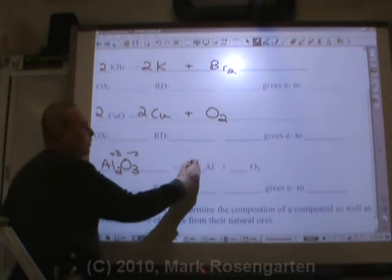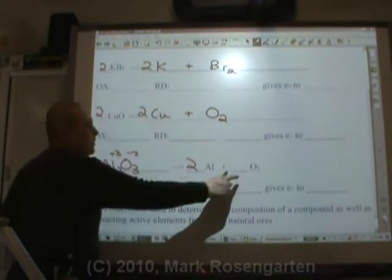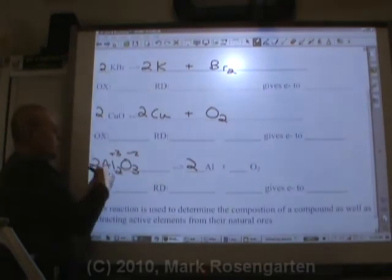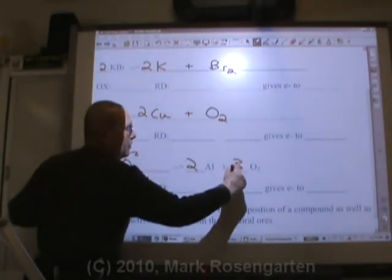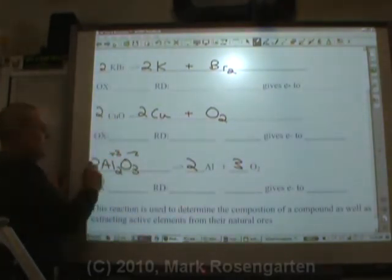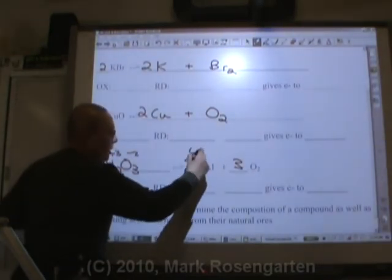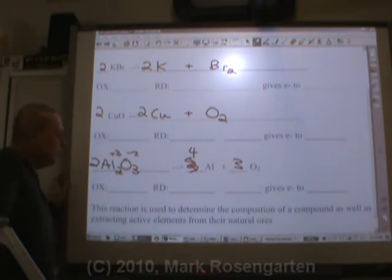Two aluminums, one aluminum. Three oxygens, two oxygens. Three times two is six, so two times three is six. And three times two is six. But that means aluminum's got four, so we have to change this aluminum to a four. And that's a properly balanced and completed decomposition reaction.